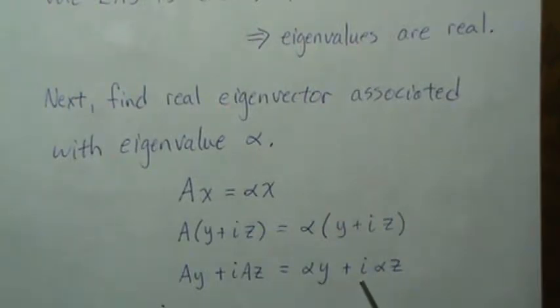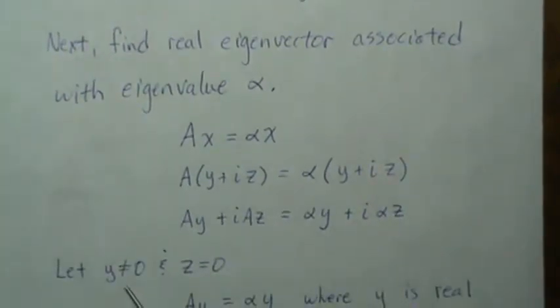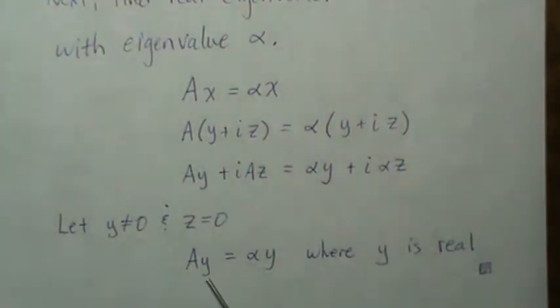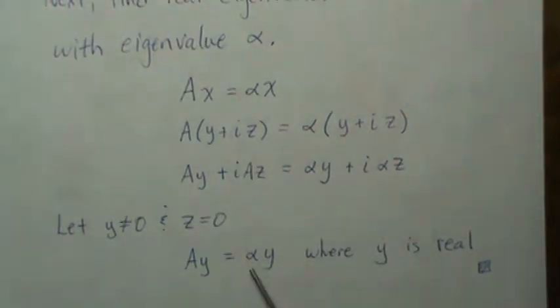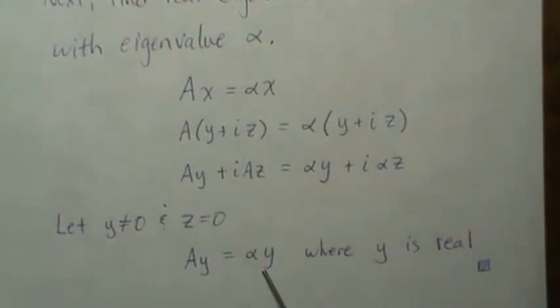If we let y not be zero and let z be zero, then this still has to hold. A times y has to equal alpha y. Well, that's the definition of eigenvalue-eigenvector, so y is an eigenvector associated with this eigenvalue and y is real. So there exists an eigenvector that's real that's associated with that real eigenvalue.